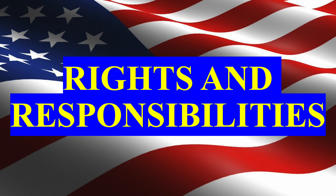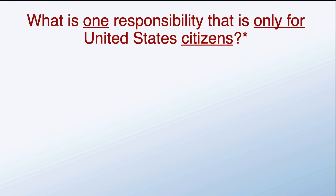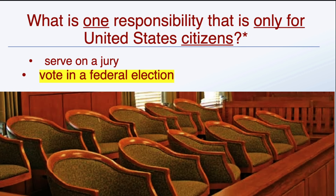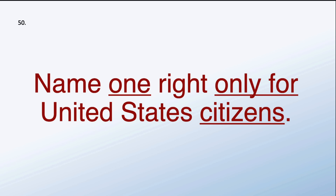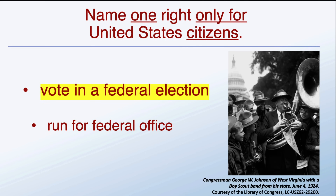Rights and Responsibilities. What is one responsibility that is only for United States citizens? Only for citizens: to vote in a federal election. Name one right only for United States citizens. Vote in a federal election — only US citizens can vote in a federal election.